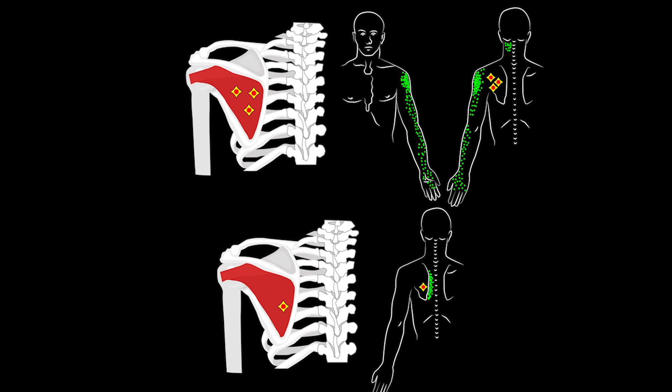Activation of trigger points in the infraspinatus muscle usually occurs as a result of acute stress or numerous stressful loads, for example, while leaning on a ski pole while skiing.